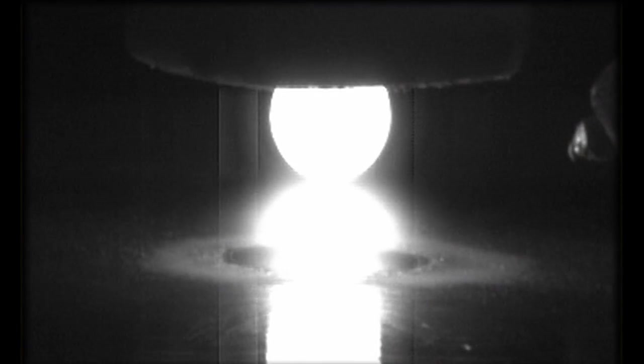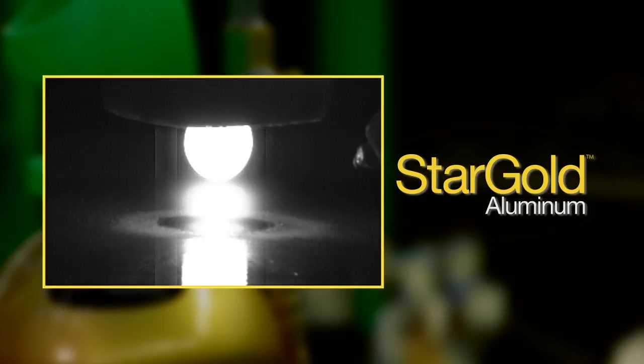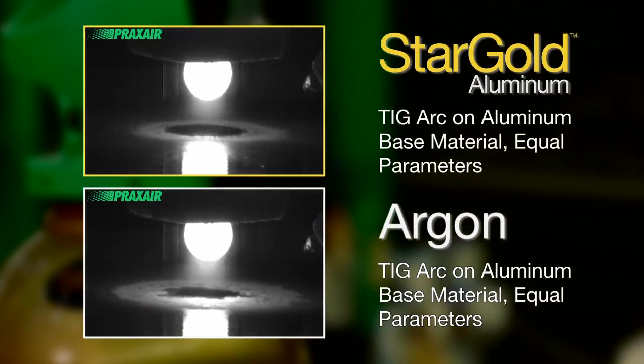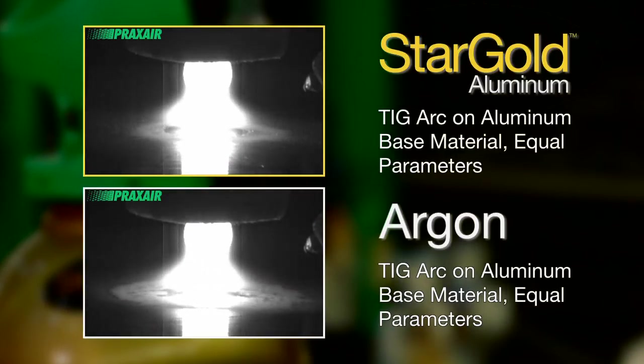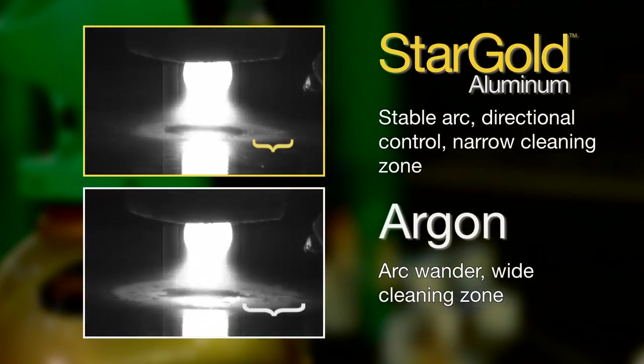This high-speed video of an AC TIG arc shows how the Stargold Aluminum shielding gas can enhance the performance of the arc. Typically, when using pure argon as the shielding gas, the arc attaches to the workpiece in an erratic manner. This results in arc wander and a wide cleaning zone.